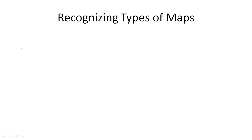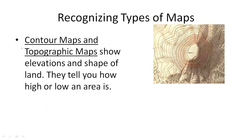There are many different types of maps and today we're going to talk about four of them. The first is called a contour map or a topographic map. Contour maps and topographic maps show elevations and the shape of land, so they tell you how high or low an area is.